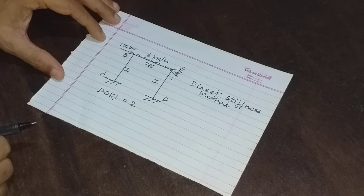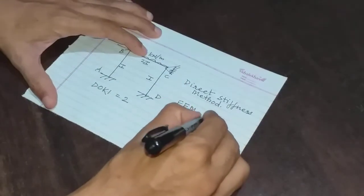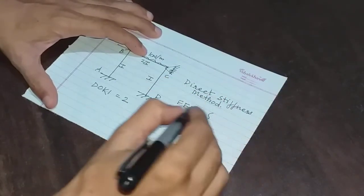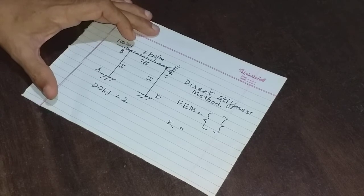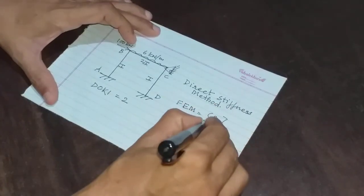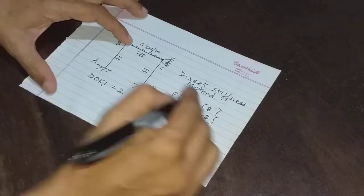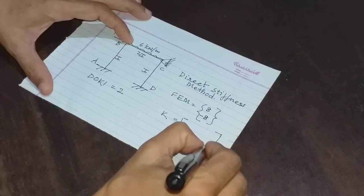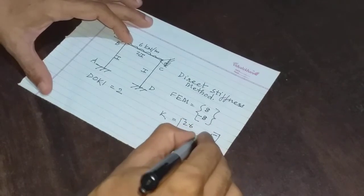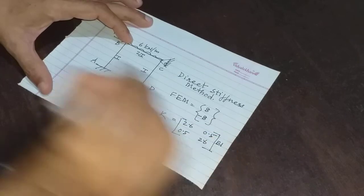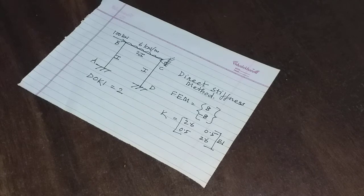We were analyzing it using the direct stiffness method. We derived the FEM matrix for the frame and we derived the stiffness matrix K for the frame. The FEM matrix had values 8 and minus 8. The stiffness matrix was of size 2 by 2 with values 2.6, 0.5, 0.5, and 2.6, multiplied by EI. This is what we derived in our earlier lecture.